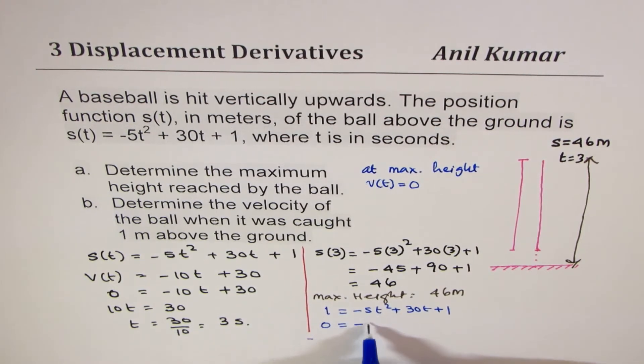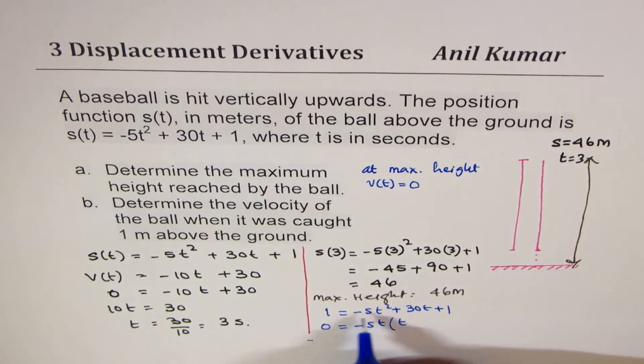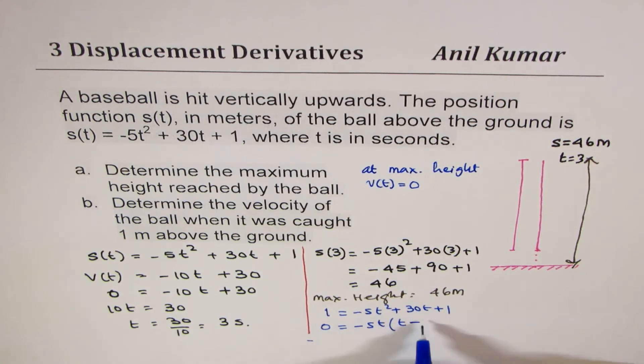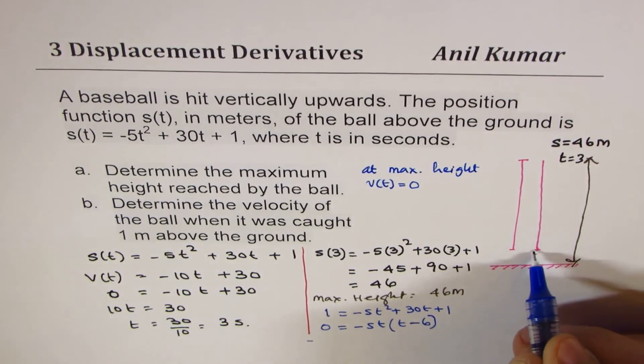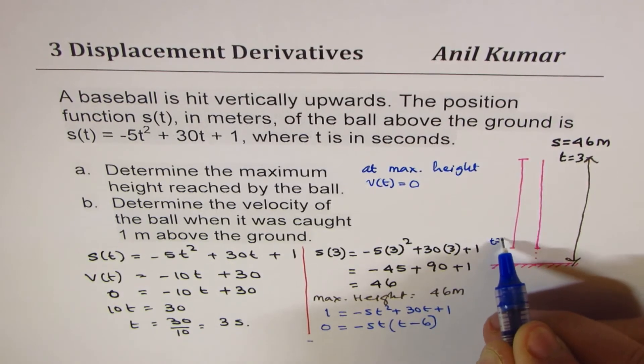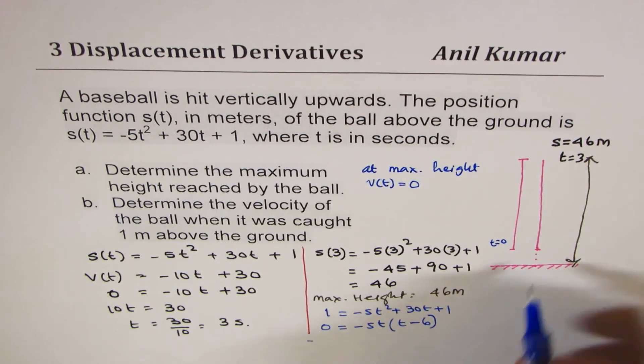We can factor out -5t. We get t, and when you factor out -5, you get t - 6. So that indicates that height of 1 meter is reached at t = 0 or at t = 6.